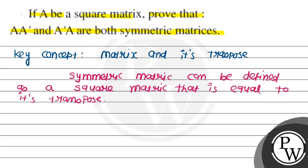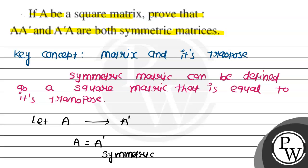Now, if any matrix — let A be any matrix — and if we take the transpose, then that will be A'. So, if A and A' are equal, then that matrix is known as a symmetric matrix.